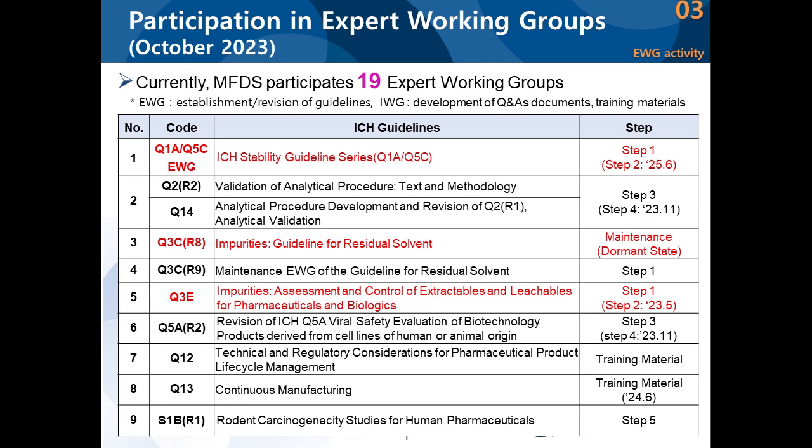The Q1A/Q5C stability guidelines are probably going to be most impactful, including for all reviewers and drug developers. Q2 and Q14 will cover validation of analytical procedures and analytical procedure development, which will be topics of other presentations today. The plan was to go through this within this year, but it's not going as fast as expected, though there is still steady improvement. Q3C on impurities is a very important guideline in terms of chemical compounds. The guidelines have already been adopted and currently they're looking at maintenance, which includes revising vocabulary and correcting typos.